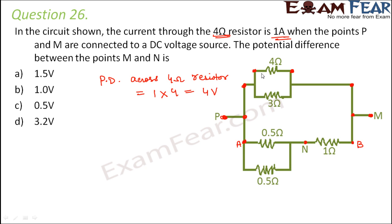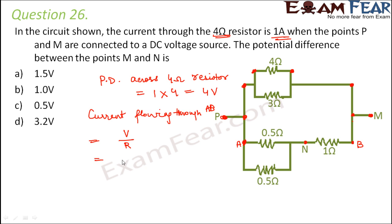Looking at this circuit, you can see there is no junction between these points. So the potential at each point along the top rail is the same, and similarly along the bottom rail. Therefore the potential difference across AB would also be equal to 4 volts. Now we have to calculate the current flowing through the arm AB. The current flowing through it equals V by R, so V is 4 volts. R would be the net resistance along the length AB.